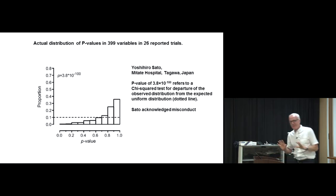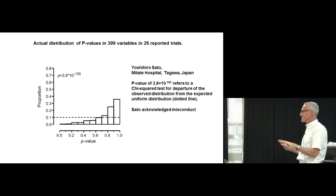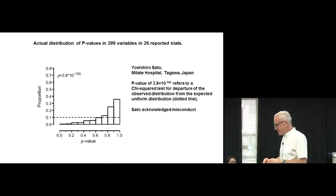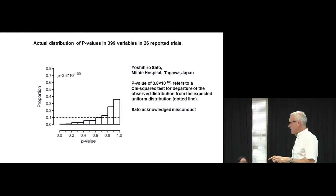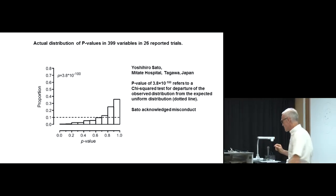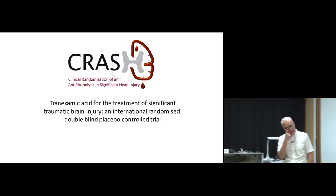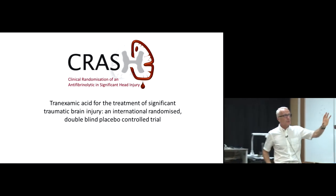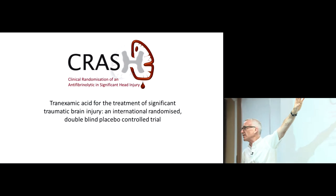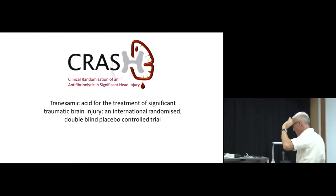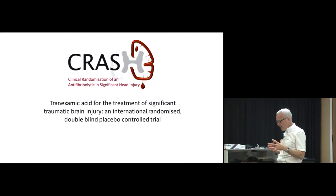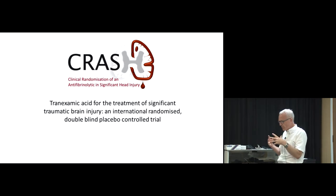What we've talked about so far is the use of statistics to check the integrity of data after the trial is over — it's useful for people doing systematic reviews. But the real value of using statistics is actually while the study is going. I'm doing a trial at the moment called the CRASH-3 trial — the same drug, tranexamic acid. We're doing a trial to see if tranexamic acid can improve outcome in patients with head injuries.